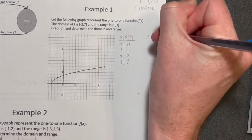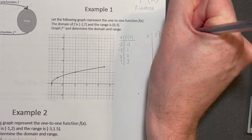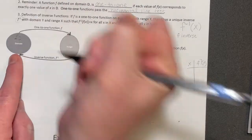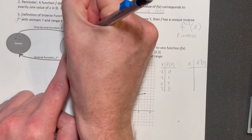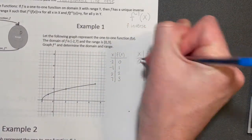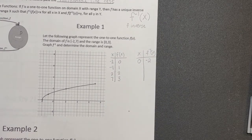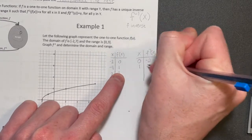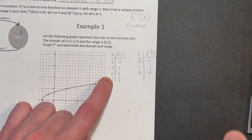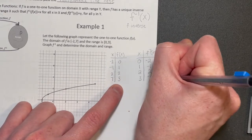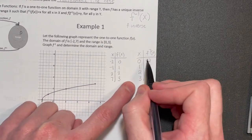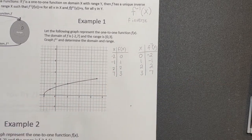The inverse of the function maps it backwards — it's a swap of the x and y values. Negative 2 mapped to 0, so the inverse takes that 0 and maps it back to negative 2. Negative 1 mapped to 1, so the inverse maps 1 back to negative 1. Two mapped to 2, so 2 maps back to 2. And 7 mapped to 3, so 3 maps back to 7. All that happens is a swap of the x and y values.